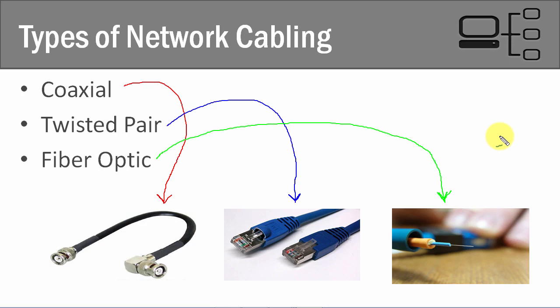So those are the three different types of cables: coax, twisted pair, and fiber optic. We're going to be talking about twisted pair and fiber optic in detail in future lectures in this section. So let's go ahead and get into it.